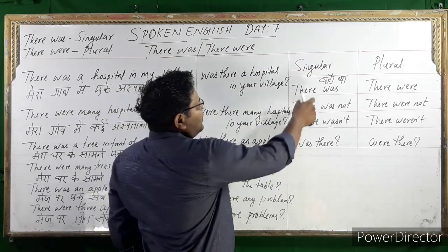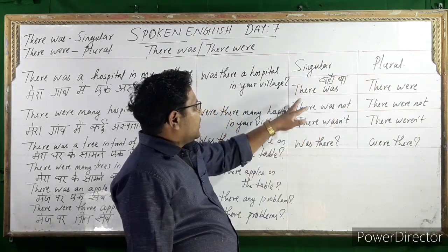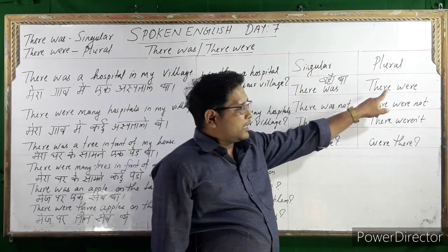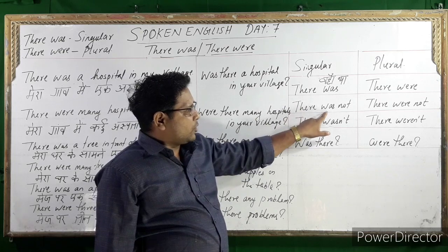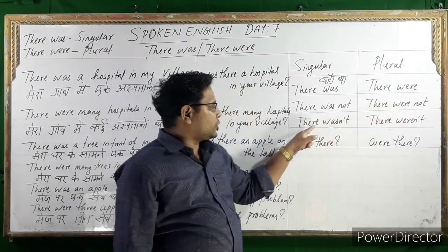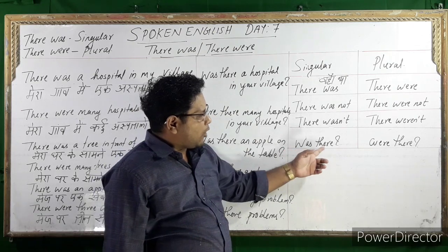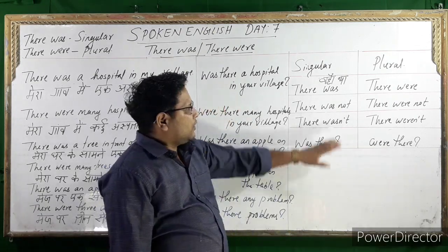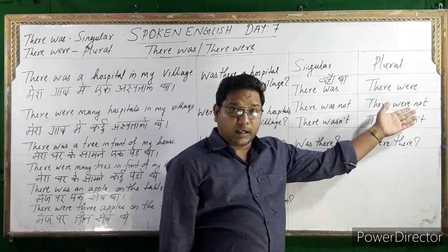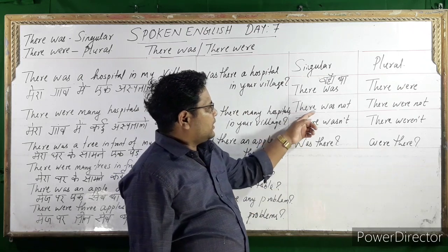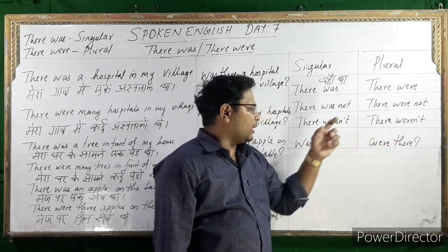Singular means one, plural means more than one. 'There was' is singular, 'there were' is plural. The negative forms are 'there was not' and 'there were not.' The short forms are 'there wasn't' and 'there weren't.' For questions, we use 'was there' or 'were there.'